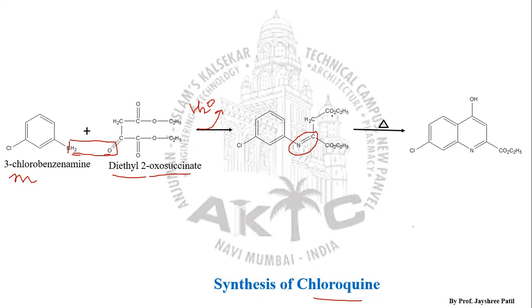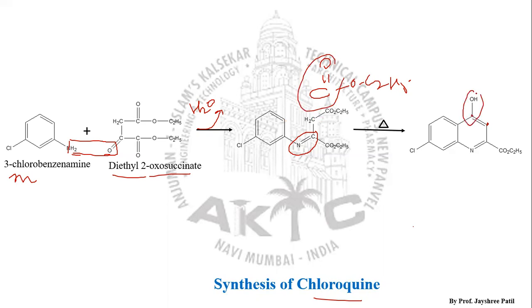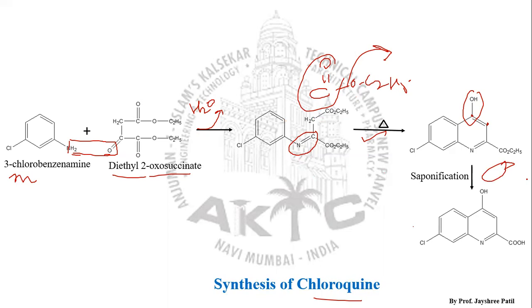The resulting product on heating will undergo cyclization. The C=O moiety and the CO₂C₂H₅ group are involved; the CH₂ remains as is, and the CO from that moiety is lost with elimination of OC₂H₅. So heating of this Schiff product leads to cyclization, giving us the second structure.